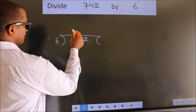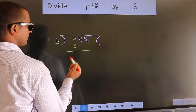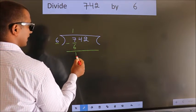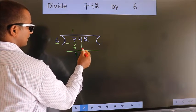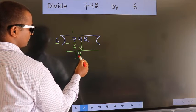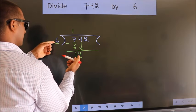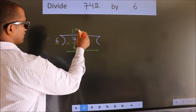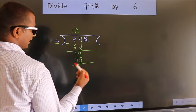Now we should subtract, we get one. After this, bring down the beside number, so four down. So fourteen. A number close to fourteen in the sixth table is six twos twelve. Now we subtract.